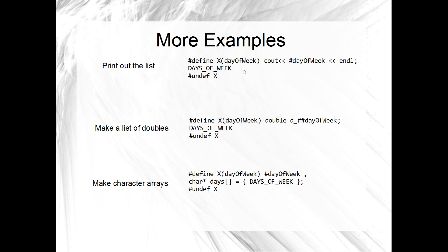The list just goes on — there's no limit to how many different guises we could use our list in. If you wanted to print out the list, for example, you would just need the stringizing operator: define X(day_of_week) as cout << #day_of_week, then call your DAYS_OF_WEEK macro. It's going to replace DAYS_OF_WEEK with seven calls to X(day_of_week) — Monday, Tuesday, Wednesday, Thursday, Friday, Saturday, Sunday as the parameters. You might want to make a list of doubles — that's pretty easy using the concatenation operator. Or you might want to make character arrays — something like this is going to make a list of seven items in a character array, each with another day of the week.